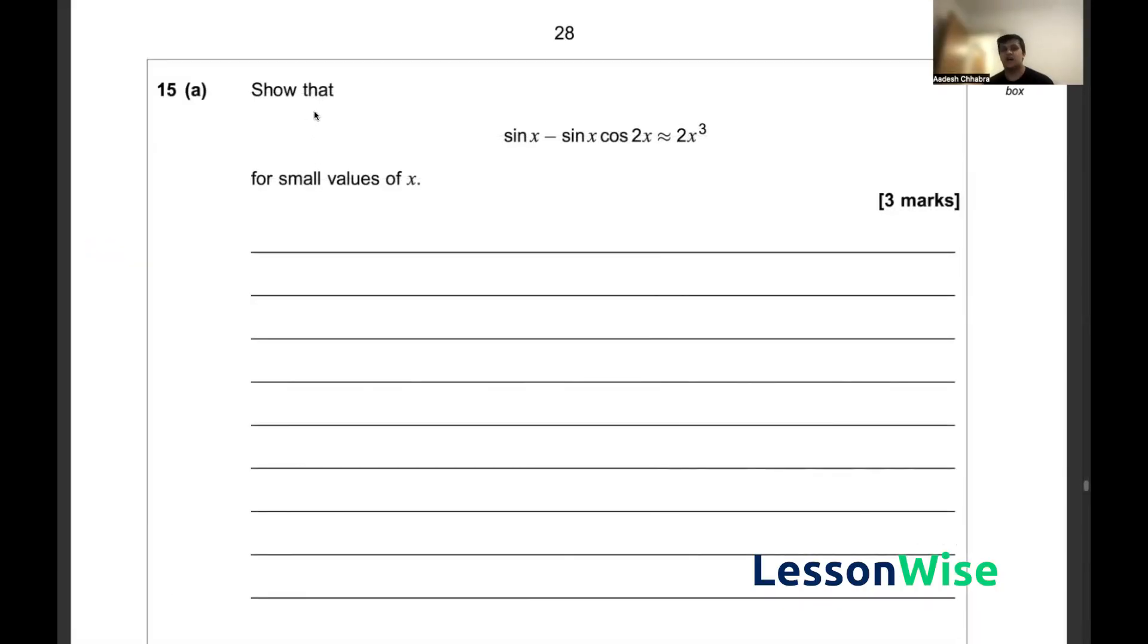In question 15 we've been asked to show that sin x minus sin x cos 2x is approximately equal to 2x cubed for small values of x.